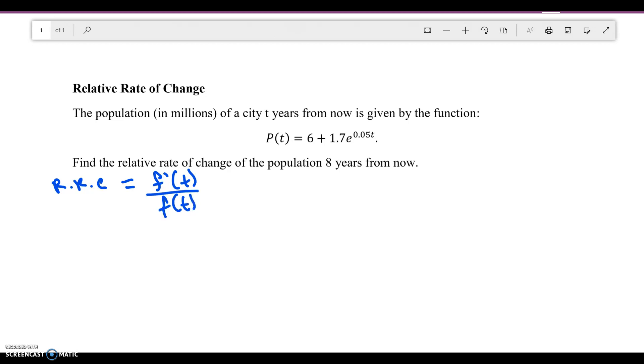So the derivative of the function is going to be what? The 6 is going to go away. So we're going to have just the derivative of 1.7 e to the 0.05 t. The 1.7 really isn't going to do anything, I'm going to leave it there. And the derivative of e to the t, if you remember, is still going to be e to the t.